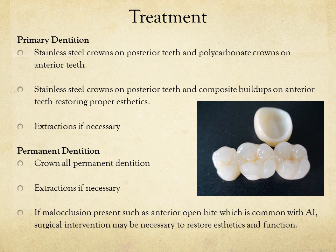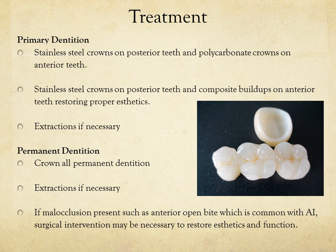The treatment for amelogenesis imperfecta — since it is present in both primary and permanent dentition — requires restoring both sets of teeth. For primary dentition, you mainly want to crown all the teeth to provide adequate strength and structure for mastication and proper function. In the anterior region, a more aesthetic crown is preferred, such as a strip crown with composite or a polycarbonate crown.